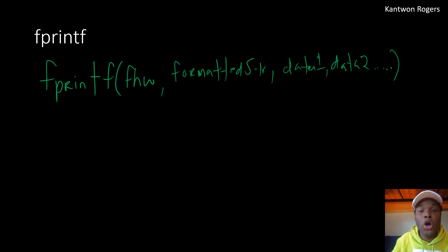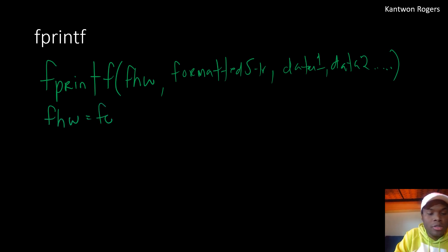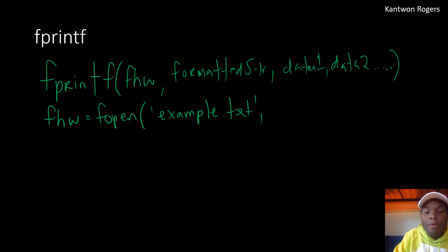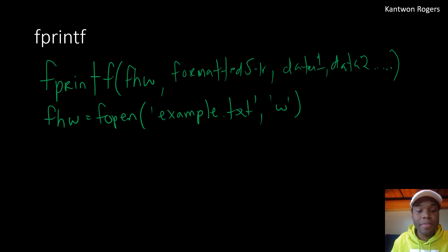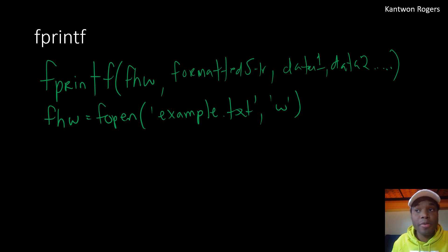Let's do an example. Say I want to create a new file called example.txt. First I need to open this file with writing permissions: fhw = fopen('example.txt'). It's very important to open with writing permissions — if you've opened a file with reading permissions you cannot use that file handle with fprintf, just as if you open with writing permissions you can't use that handle with fgetl or fgets. If the file doesn't exist, MATLAB will create it as a blank file. If it does exist, MATLAB will delete everything inside, which could be a problem.